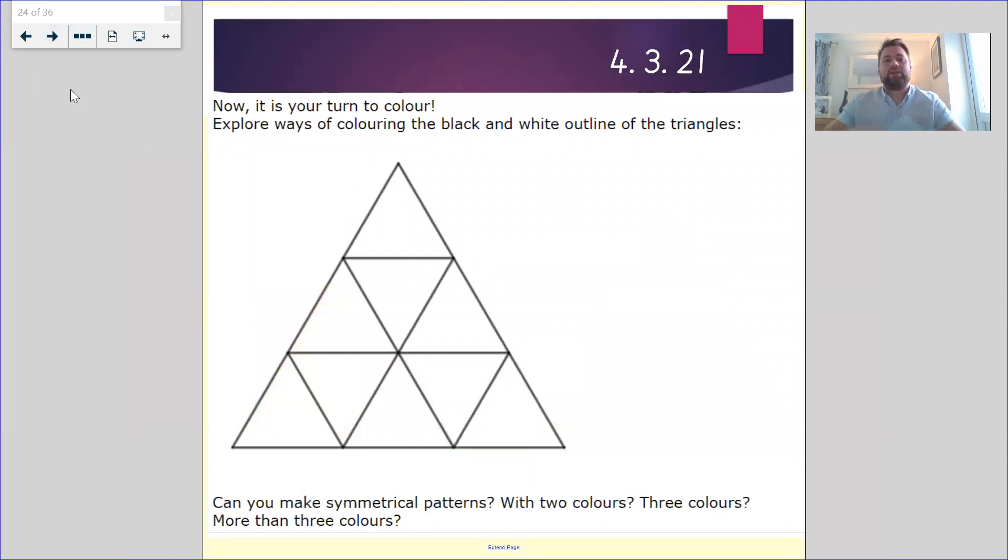Now, what you're going to do is explore ways of coloring the black and white outline of the triangles. What I would like you to do is can you make symmetrical patterns? So can you make it so if you were to draw a line down the middle, would the triangles on this side be the same as this side? Are there any other lines of symmetry that you could do? Would it work if you did it that way? Or would it work if you did it that way?